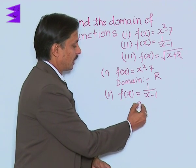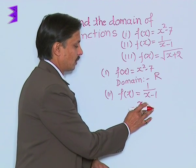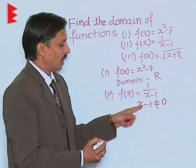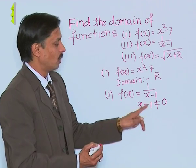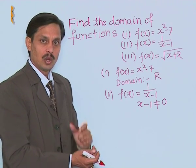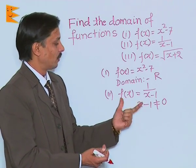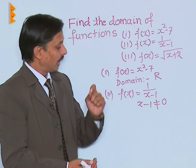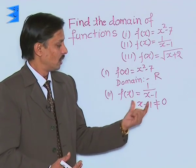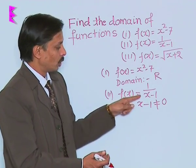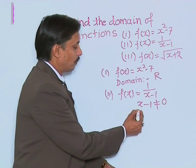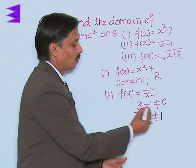We should rule out x - 1 = 0, because if x - 1 is 0, it means something divided by 0, which means the value is infinite — the function will not be defined. A function is defined only when it gives a real value. So the denominator should not be 0, meaning x - 1 ≠ 0, which implies x ≠ 1.